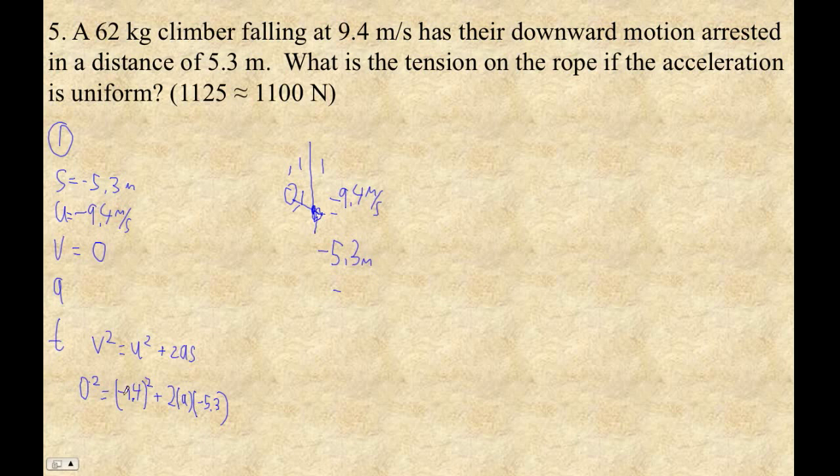So if I solve that, the calculator just ran out of batteries. Here we go, calculator number 2. You are the relief calculator. So 9.4 squared divided by 2 divided by 5.3. And this acceleration is positive 8.3358. Now we have two sig figs. If we carry even four sig figs, we're in good shape.